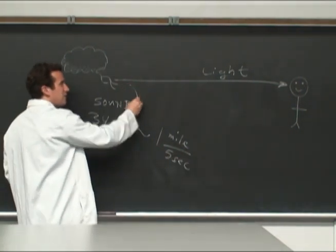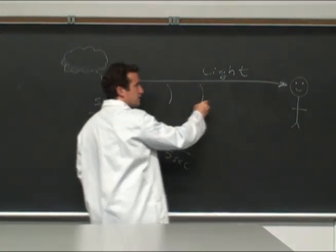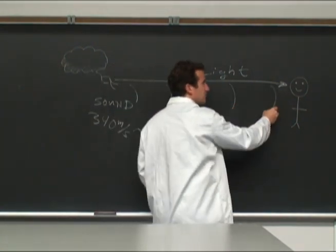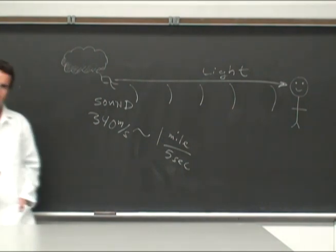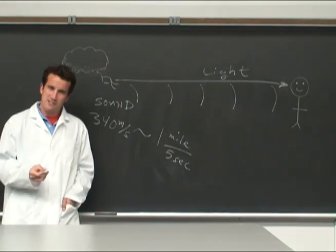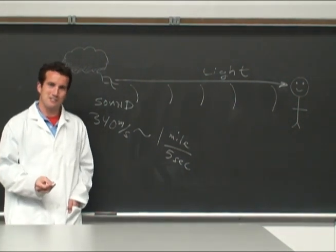So, if you count the amount of seconds between the light and the sound, you can accurately predict the distance to the lightning strike. Every 5 seconds you count, 1 mile of distance.